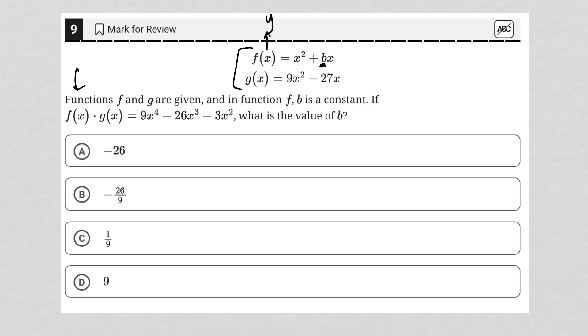So the question is literally telling us exactly how to set up our equation in order to solve for b. It's saying that we have to multiply the two functions together. So I'm going to do that. f of x is x squared plus bx.